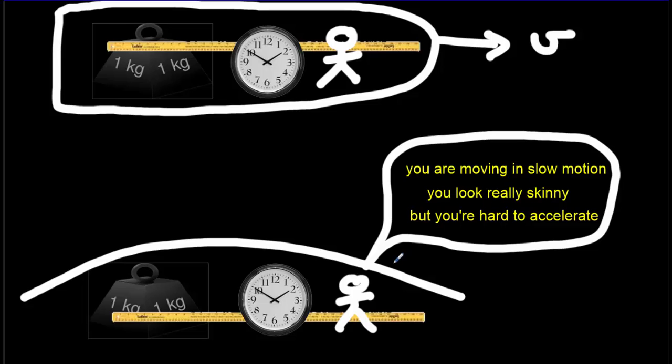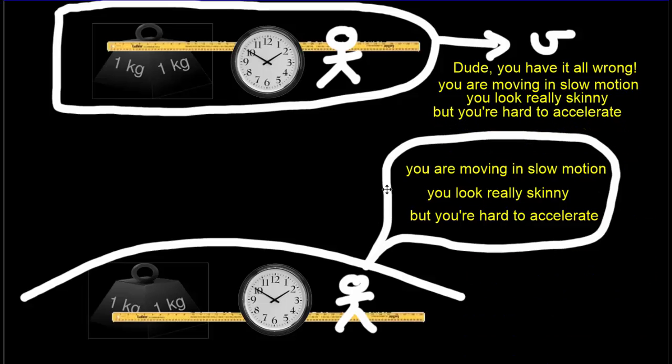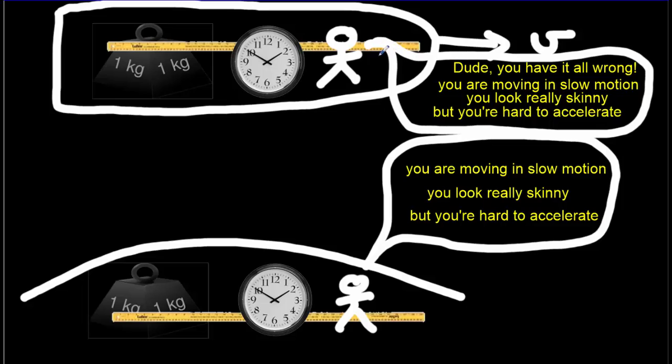But what makes this the theory of relativity is when the second twin on the rocket ship looks back to Earth. Because what he's going to say is, Dude, you've got it all wrong. It's you who are moving in slow motion. It's your clock that's running slow. And it's you who's too skinny. Your meter stick is too short. And you're the one that's hard to accelerate. And it's this symmetry between the two frames that makes this the theory of relativity. It's really saying that motion can be measured just as well from one reference frame as from another reference frame. And this symmetry, as innocent as it might seem, leads to all these special effects in the theory of relativity.